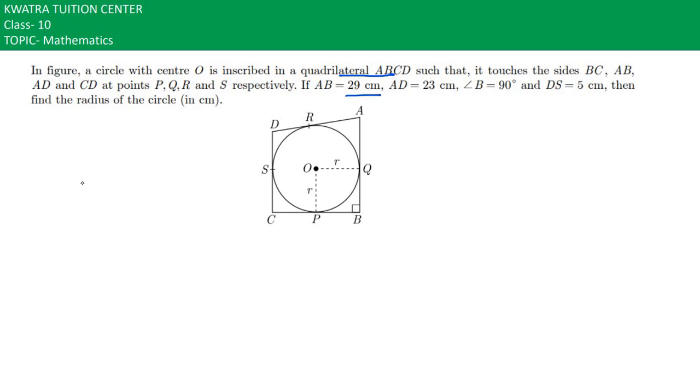AB is given as 29, AD is given as 23, angle B is given as 90, and DS is given as 5 cm. They are asking us to find the radius.